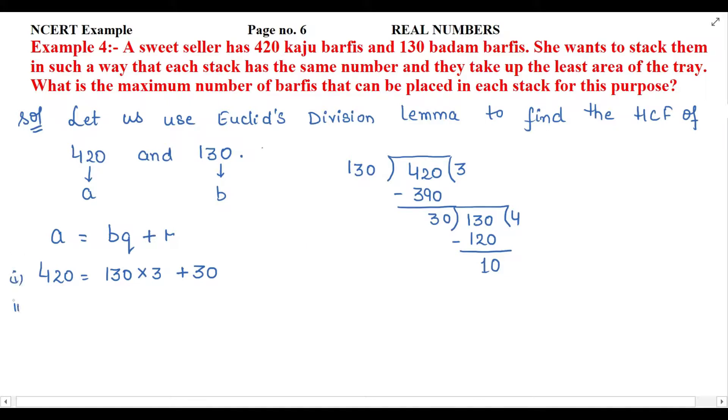This is your first step and the second step will be: write 130 in the bq + r format. So b is the divisor 30, q quotient is 4, plus r remainder is 10.